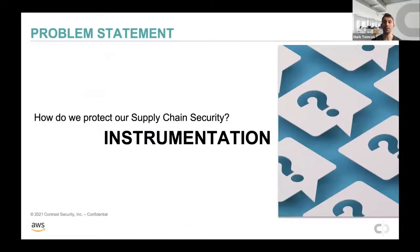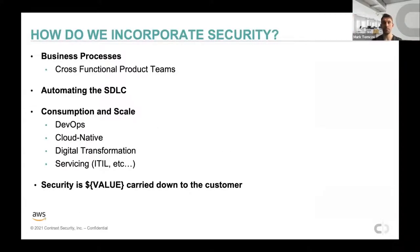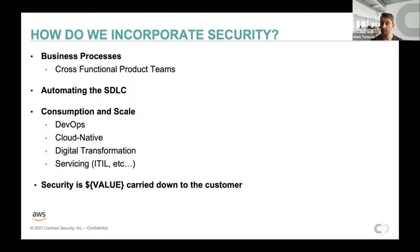Our big problem statement is: how do we actually protect our software supply chain? The answer is through implementation and making sure that your organization is ready to consume the instrumentation via automation. You have to make sure that your organization is ready to consume this automation — things like cross-functional product teams, DevOps, cloud-native frameworks — all these things fit together so your organization can consume what the platform team works on in terms of automations like pipelines and workflows. We're giving an example of GitHub Actions workflows, but you can use your own flavor like Jenkins. The methodologies are the same.